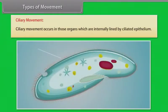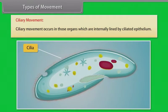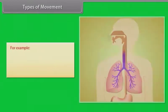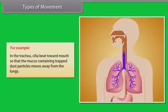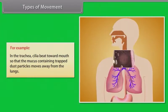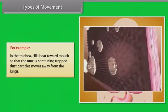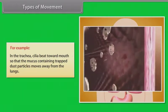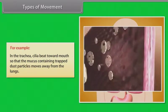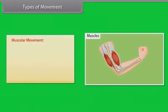Ciliary movement occurs in those organs which are internally lined by ciliated epithelium. For example, in the trachea, cilia beat towards the mouth so that the mucus containing trapped dust particles moves away from the lungs.